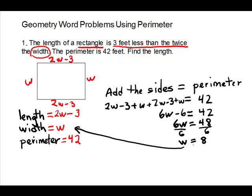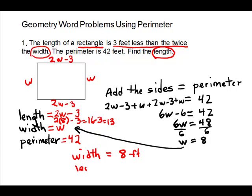Make sure you answer what the question asked for — the question asked for the length. You would hate to do all this work and not answer the final part. So we need to substitute w equals 8 into the expression for the length: 2 times 8 minus 3 equals 16 minus 3, which gives us 13. So our width is 8 feet and our length is 13 feet.